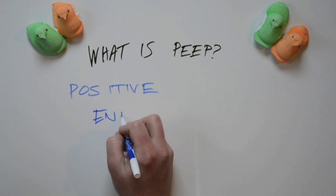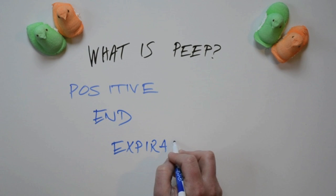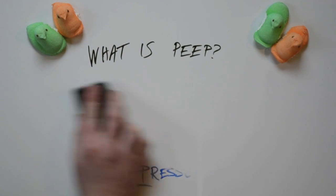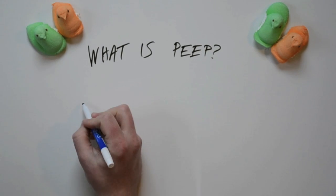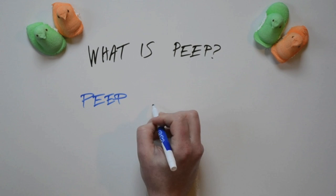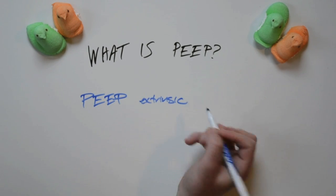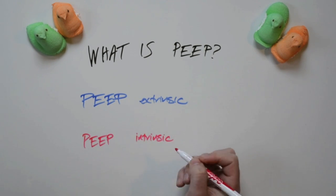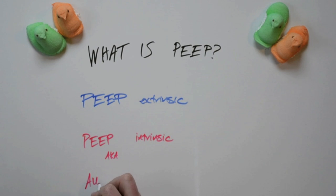PEEP is positive end-expiratory pressure. It's a pressure within the airways during the exhalation phase of a ventilatory cycle. The pressure can be set by you, in which case it's referred to as extrinsic PEEP, or it can be developed by the patient under certain situations, and in that way it's called intrinsic PEEP or auto-PEEP.